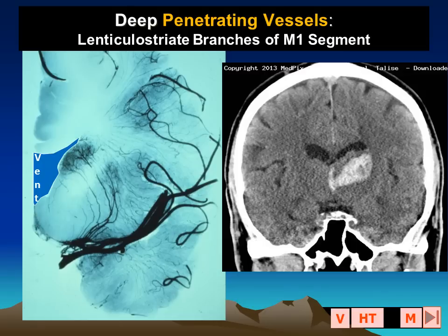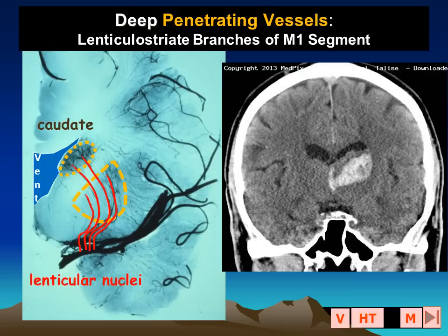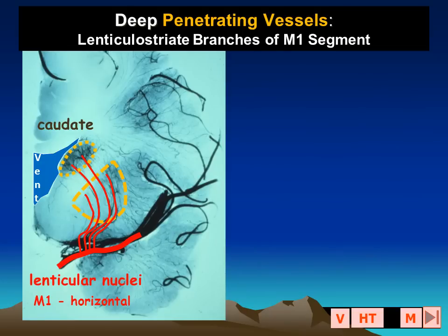Looking at this injected autopsy specimen, we can see the lateral ventricle, the increased vascularity of the caudate nucleus, the thalamus and lenticular nucleus. These areas of the brain are supplied by perforating or penetrating branches from the M1 or horizontal segment of the middle cerebral artery. When one of these vessels becomes occluded, we get a small lacunar infarction; when one ruptures, we typically get a small self-limited hematoma in the same location.